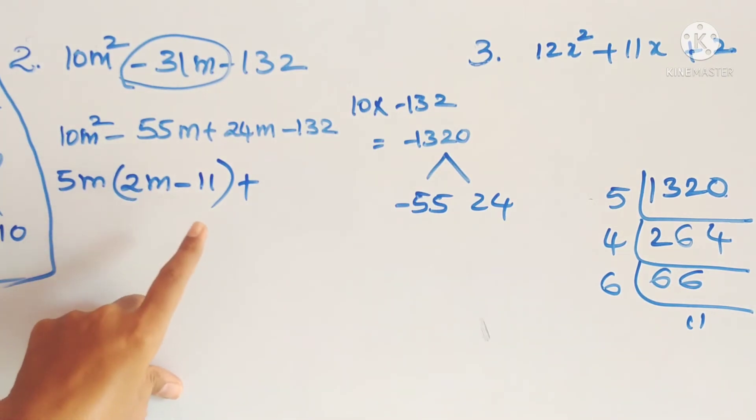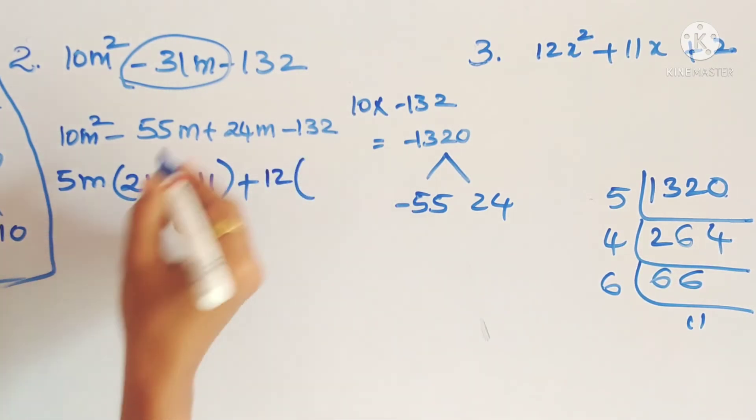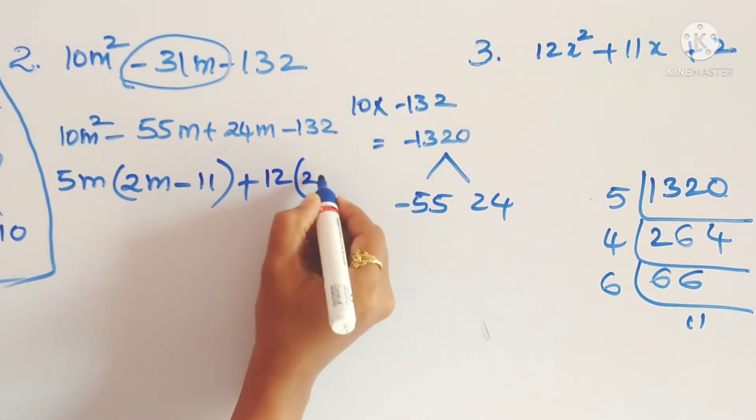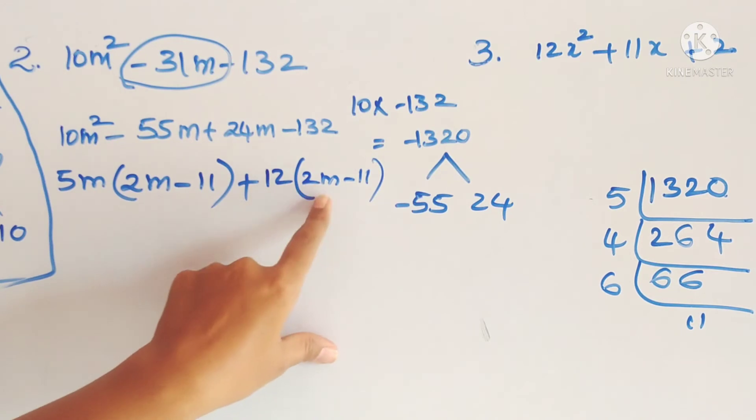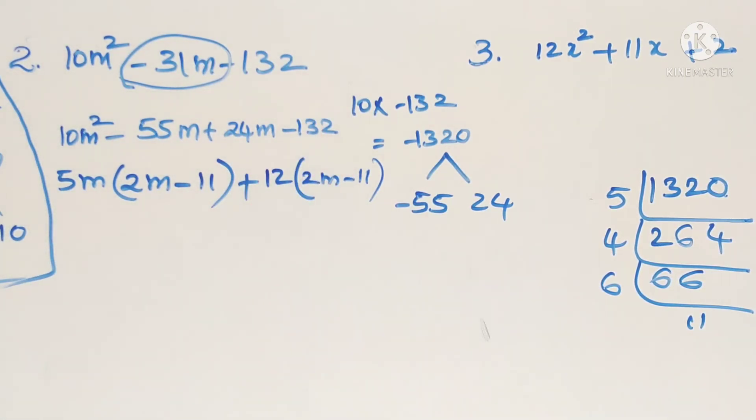So what number multiplied by 2 gives us 24? 12. So 12 twos are 24. So we write 12. 2m minus 11. So just check, 12 twos are 24, 12 into 11 is 132.